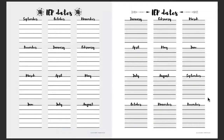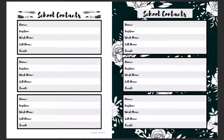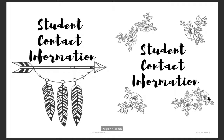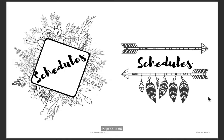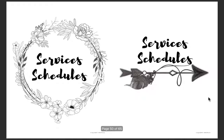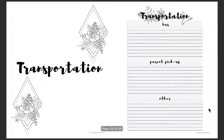There's also a January-to-December version if you prefer that. Additional sections include school contacts, a school contacts template, student contact information, student contact information templates, schedules, a services schedule, and a services schedule template for you to write down when your students have speech, APE, or transportation, plus a transportation template.